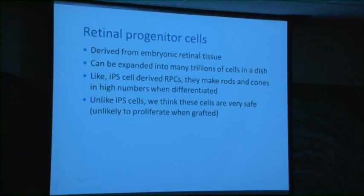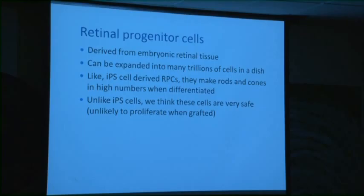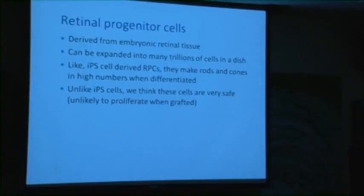In summary, the retinal progenitor cells I've described can be isolated from embryonic retinal tissue including humans. We can expand them into trillions of cells in a dish. Like IPS and ES cells, they make rods and cones when differentiated. But unlike these cell types, we think they're very safe and unlikely to proliferate after transplantation. Thank you very much.